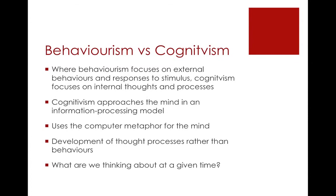Where behaviorism focuses on external behaviors and responses to stimulus, Cognitivism focuses on internal thoughts and processes. Cognitivism approaches the mind in an information processing model where the brain acts like a CPU in regards to how it handles processes, storage, memory, and how quickly it processes information. This leads to the notion that the brain could be replicated through computers — as seen with Watson on Jeopardy! It focuses on the development of thought processes and what we're thinking at a given moment.